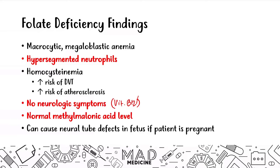Folate deficiency can cause neural tube defects in a fetus if a patient is pregnant — a very high yield association. If a patient is planning to get pregnant, it is very important to make sure they are taking adequate levels of folate and vitamin B12 before conceiving, not just during pregnancy. This is because the neural tube forms very early on in embryology, often before the patient even comes to see you in the clinic.